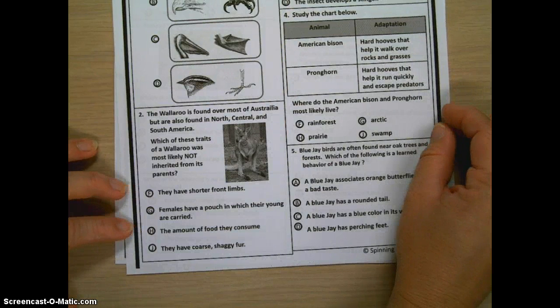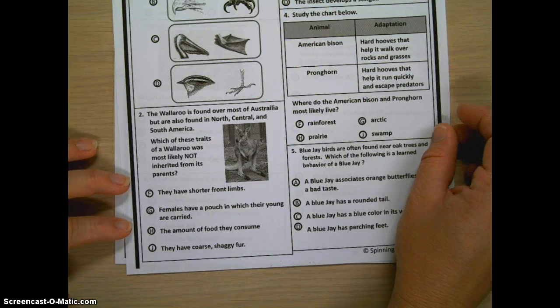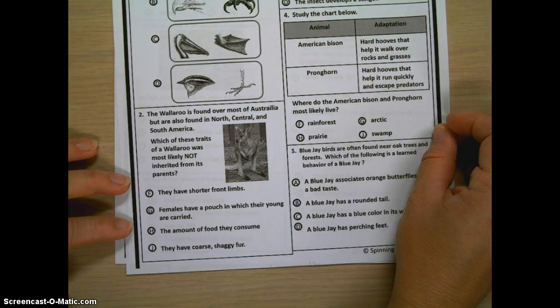Two, the Wallaroo is found over most of Australia, but are also found in North, Central, and South America. Which of these traits of a Wallaroo was most likely not inherited from its parents?